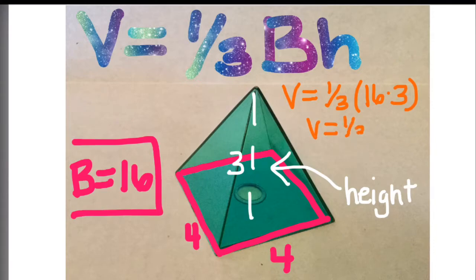Next, we're going to find what's inside the parentheses. So we need to do 16 times 3, because order of operations says parentheses first. So 16 times 3 gives me 48. One third of 48 is just dividing it by 3. So the volume equals 16 units cubed.